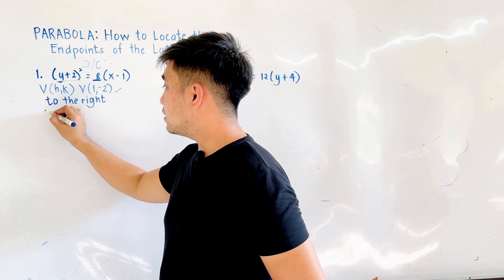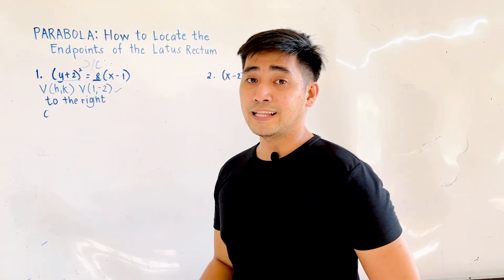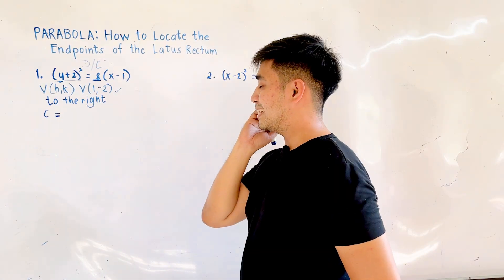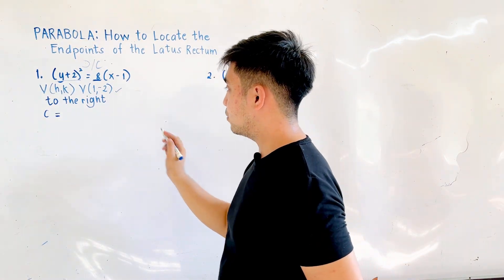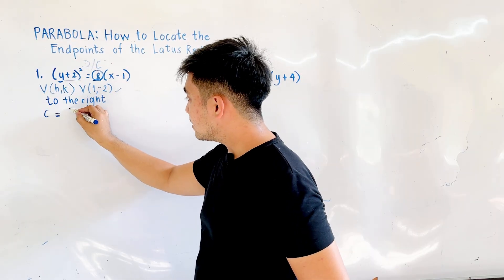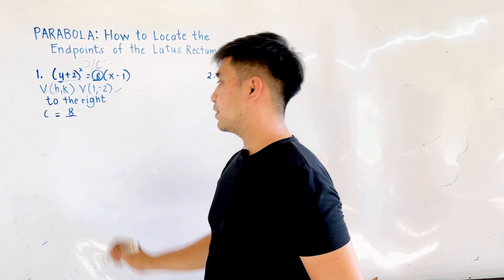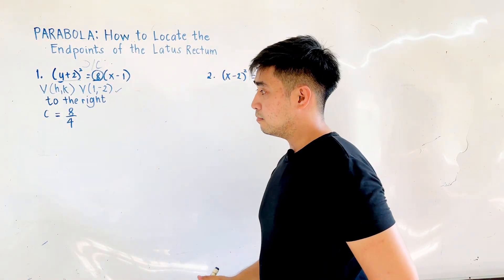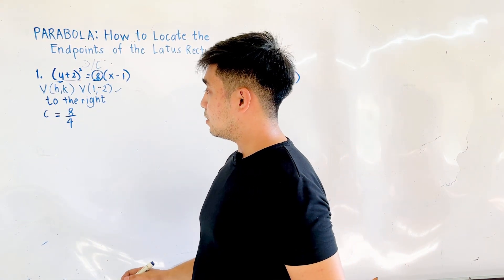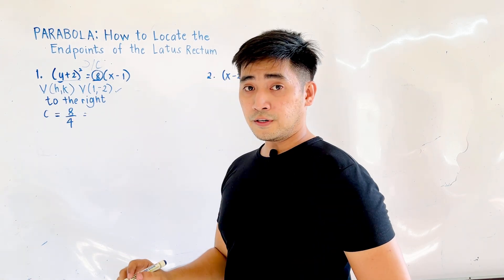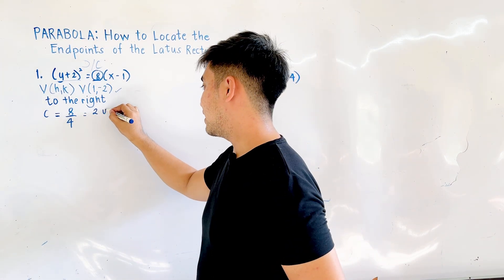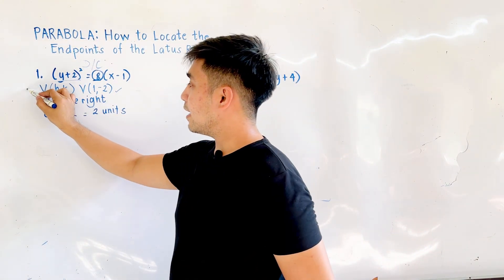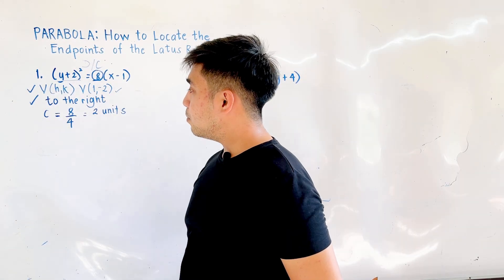The next thing to identify is the focal distance, c. We look at the coefficient on the right side, which is 8. So c equals 8 divided by 4, giving us a focal distance of 2 units.